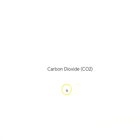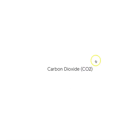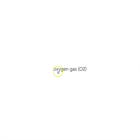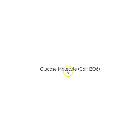Carbon dioxide is inorganic — there's no hydrogen in carbon dioxide, so it's inorganic. Water (H₂O) has hydrogen but no carbon, so it's inorganic. Oxygen gas doesn't have a carbon-hydrogen backbone, so it's inorganic. Glucose has carbon and hydrogen — it is organic, made from and found in living things.